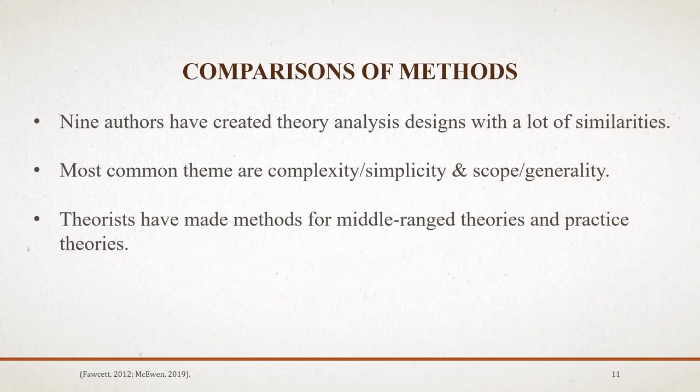On page 105 in your McEwen book, you're going to see a really nice comparison chart. I found this very useful because it is really clear when they compare different theorists and their evaluation criteria. Ellis was actually the first pioneer in 1968 to create this method. You're going to notice two major themes that keep popping up in all nine authors: the theme of complexity, simplicity, scope, and generality — which really highlights the importance of those four themes. Theorists also made methods for middle range and practice theories because of how different they are.